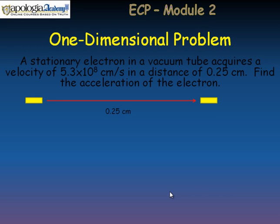So make a list of what you know. We know that the 5.3 times 10 to the 8th has to be the final velocity, but does it tell us what the initial velocity is? The answer is yes, it does. Do you see the key word? The key word is stationary. So the initial velocity is 0.